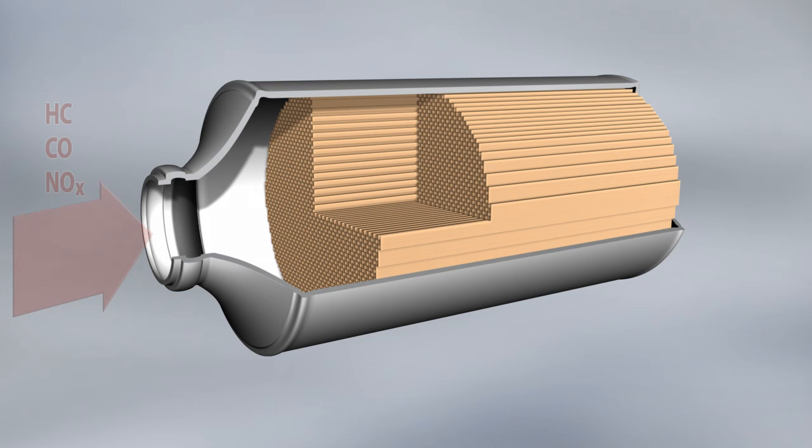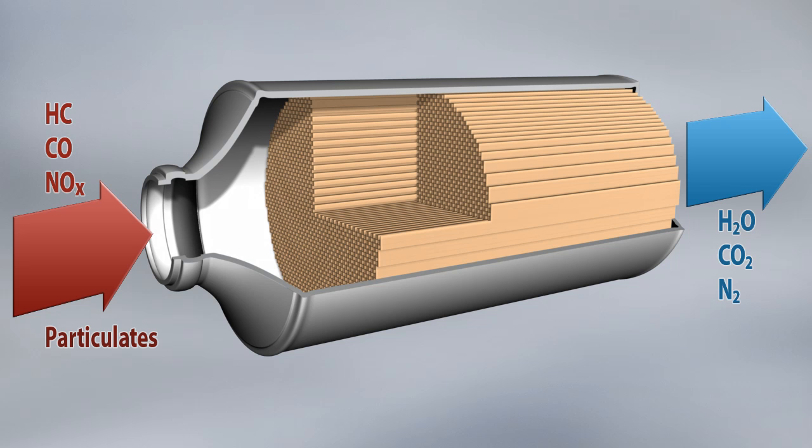The exhaust gas flow contains pollutants like non-combusted hydrocarbons, carbon monoxide and nitrogen oxides. As they pass through the channels of the ceramic structure, they are converted by catalysis into water, carbon dioxide and nitrogen. The exhaust gas flow also contains particulates.